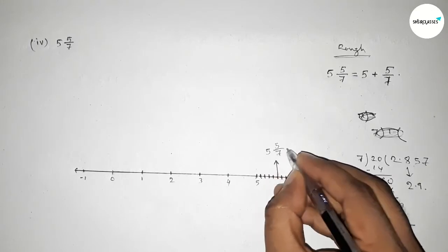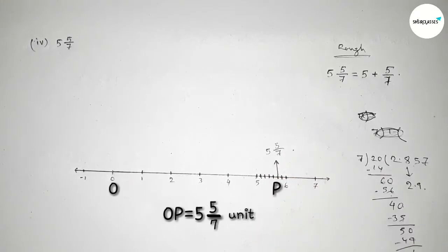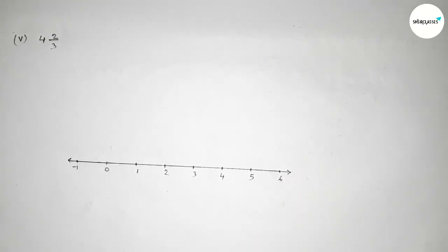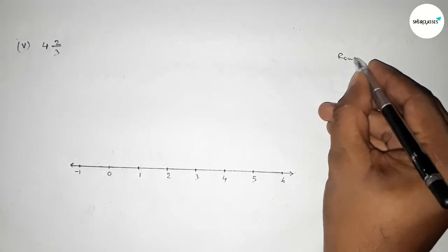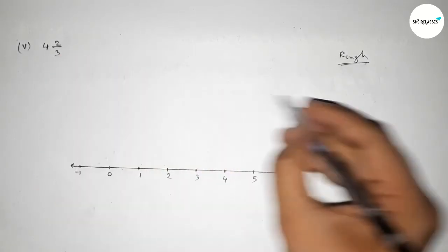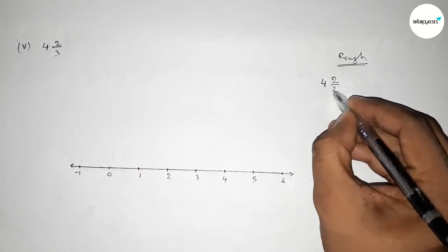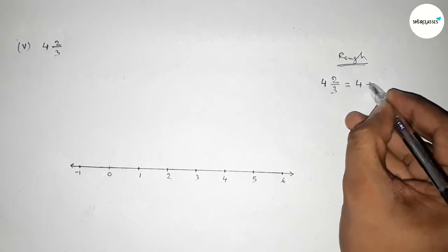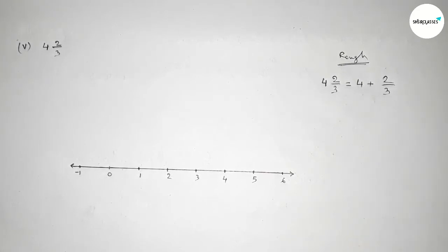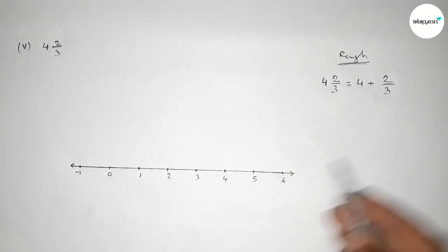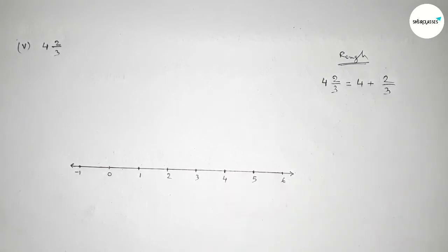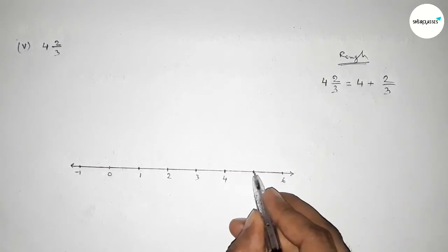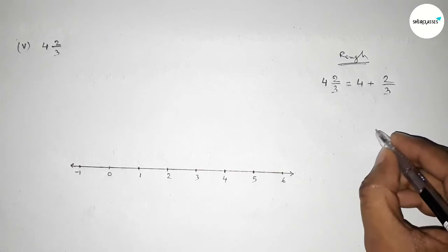This is total five and five over seven. Taking points O and P, therefore OP equals five and five over seven units. Next we have to represent four and two over three on the number line. Similarly, we can write four and two over three as four plus two over three. This is four, and now representing two over three between four and five.